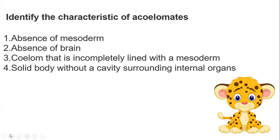Moving on to the next question: identify the characteristic of acoelomate. Options are absence of mesoderm, presence of brain, coelom incompletely lined with mesoderm, or solid body without a cavity surrounding internal organs. The correct answer is a solid body without a cavity — that is why it is known as acoelomate.